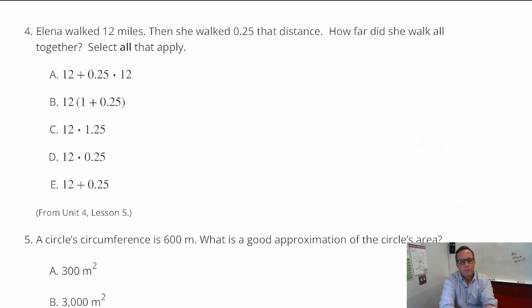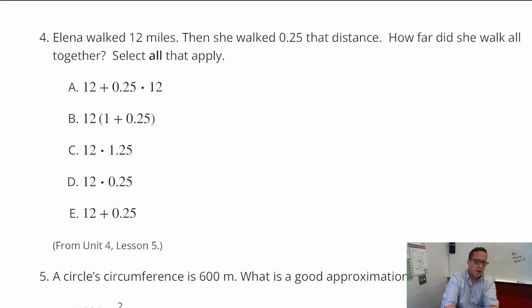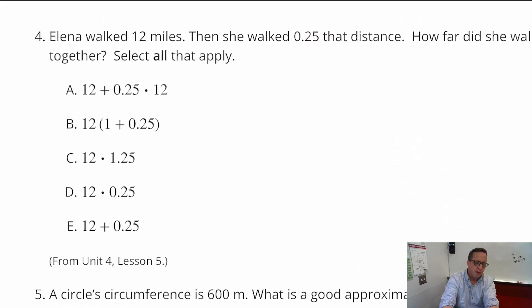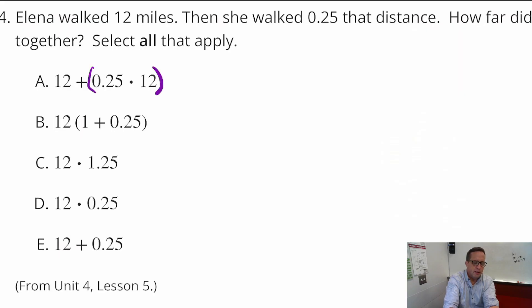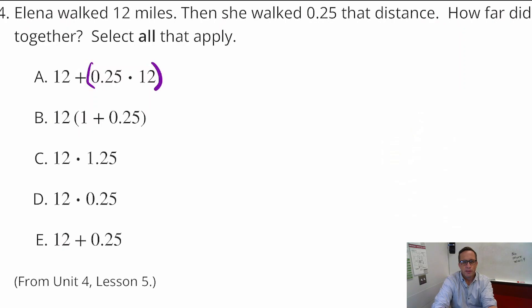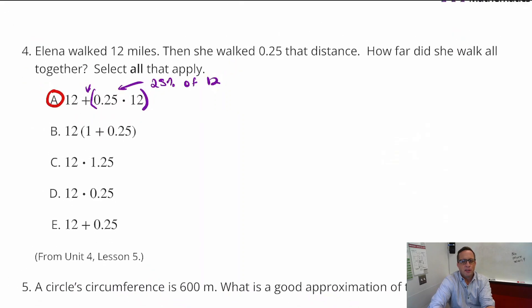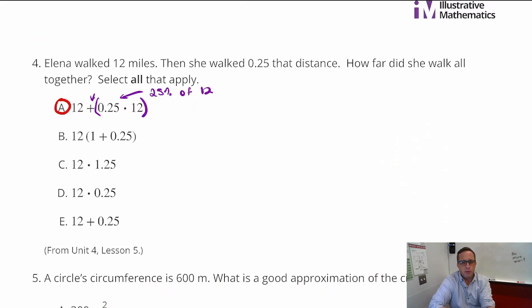Number four. Elena walked 12 miles. Then she walked 25% that distance. How far did she walk altogether? Select all that apply. So, she walked 12 miles. And then, right here, this first one. Kind of make this a little bit easier to see. Not that you need parentheses there, but it doesn't hurt. But that's basically, right here, that's 25% of 12. And you're increasing that. So, that has got to be an option right there. Because that shows an increase of 25%. It doesn't say 25%, but 0.25 means 25%.